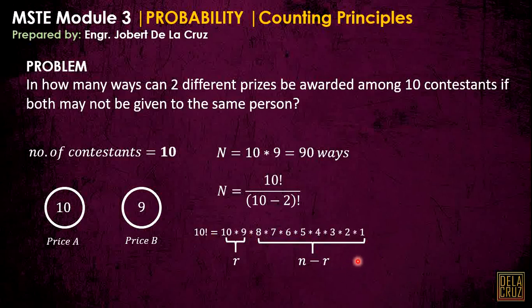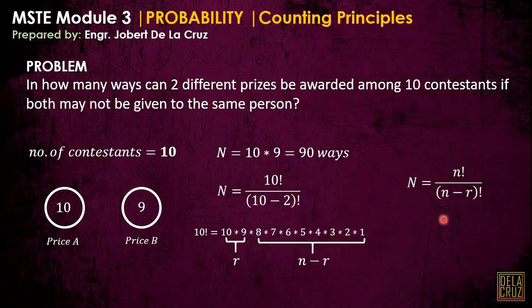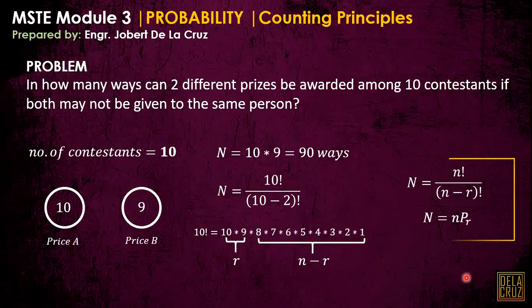This is actually permutation. As you can see, this looks familiar — it is just the formula of permutation: n factorial divided by (n minus r) factorial, where n is the number of contestants and r is the number of prizes. We can write this as nPr. This is the basic permutation formula.